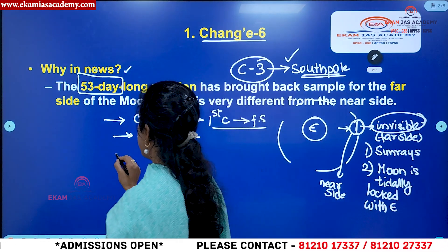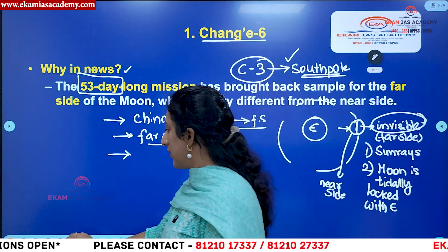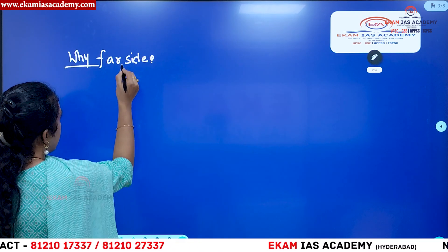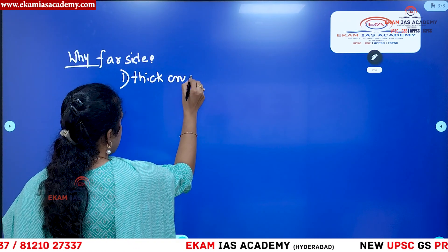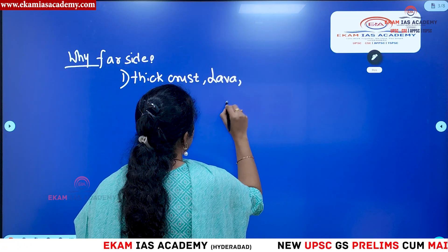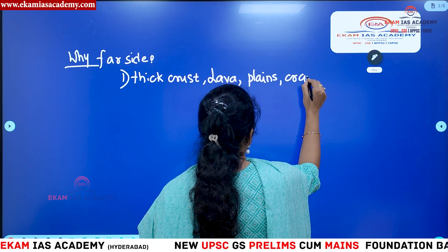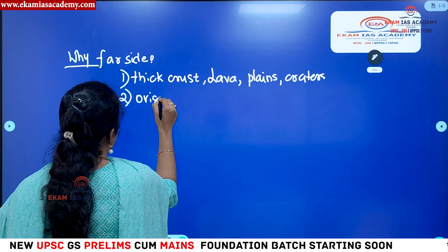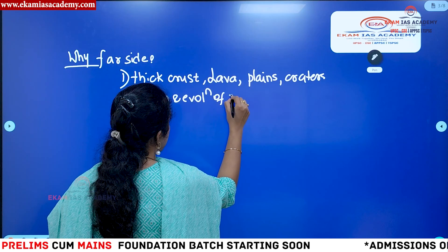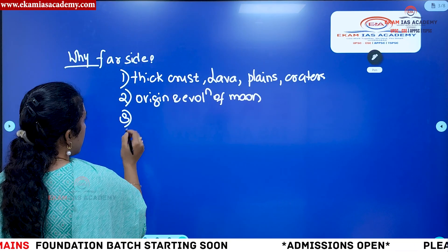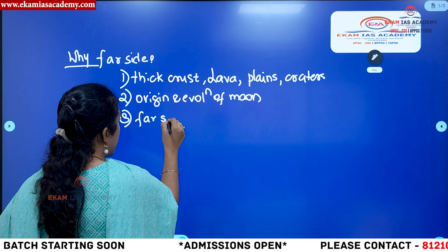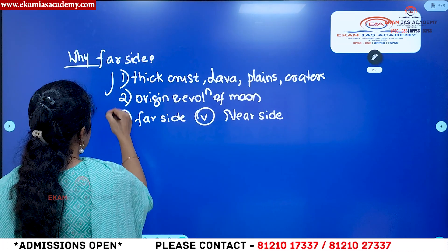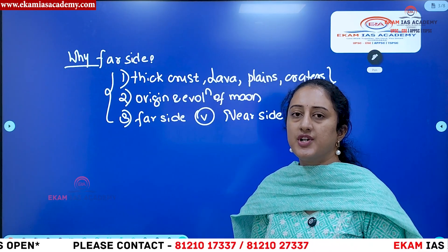Why is China interested in exploring the far side? First, the far side has a very thick crust, there is some emission of lava, and there are planes on the surface as well as craters. Second, exploring it helps in understanding the origin and evolution of the moon. Third, it helps us understand why the far side is different from the near side of the moon. For these reasons, China sent the Chang'e 6 mission.